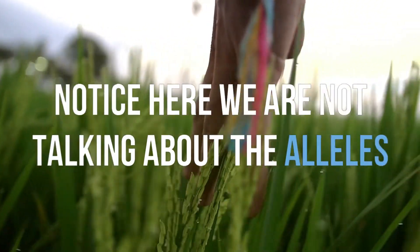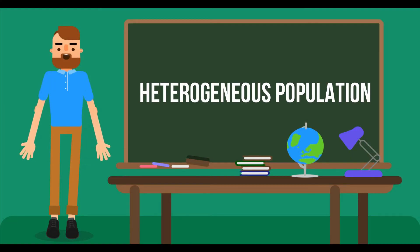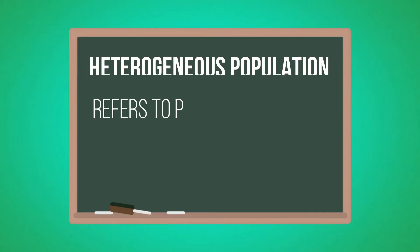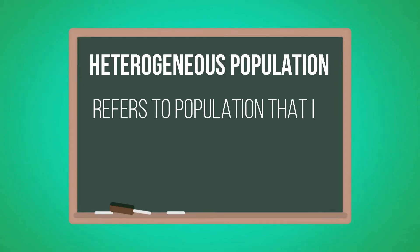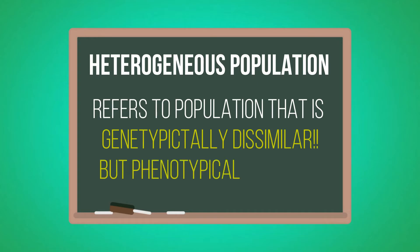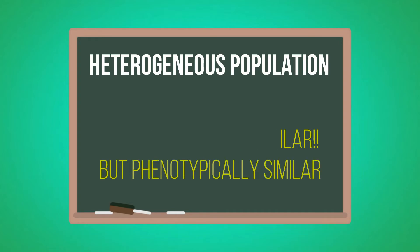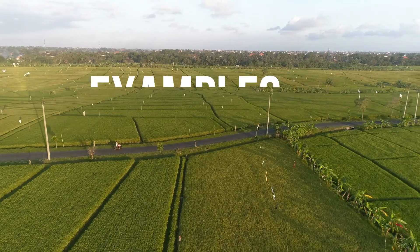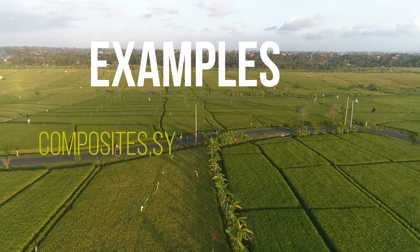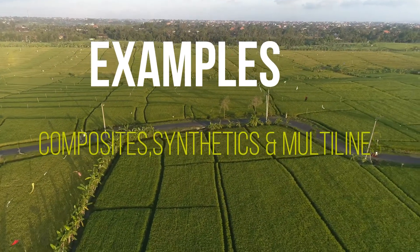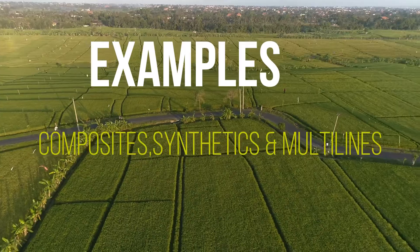Now let's move to heterogeneous population. In a heterogeneous plant population, individuals within a population are genetically dissimilar but phenotypically similar. Examples include composites, synthetics, and multilines — they look uniform phenotypically, but they are genetically dissimilar.